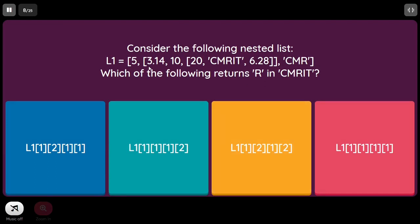Consider a nested list L1. We need to find which expression returns 'R' in CMRIT. L1[0] is 5 and L1[1] is a nested list containing 3.14 at index 0, 10 at index 1, and another list at index 2. Inside that we have CMRIT, and within CMRIT, R is at index 2. So option C is the correct answer.